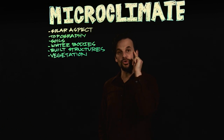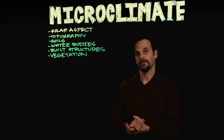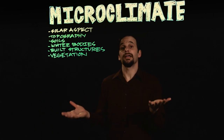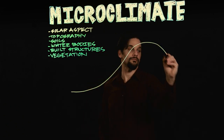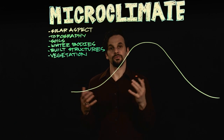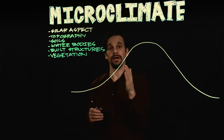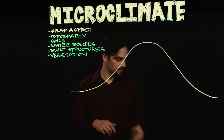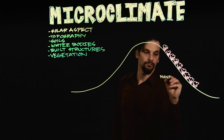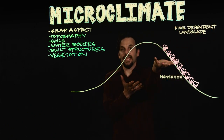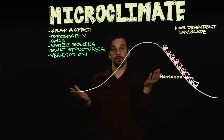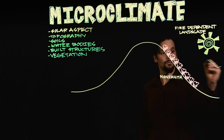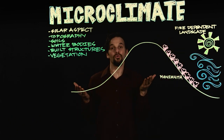Noticing microclimates is an observational tool that will make you a better designer. For instance, where I lived in the high desert of Arizona, there was a plant called Manzanita, or Arctostaphylus. That plant requires fire as part of its regeneration. So wherever you see that plant in abundance, it's what is called a fire-dependent landscape. So when you find a thick stand of Manzanita on a south- or sun-facing or west-facing slope, which is also the direction the prevailing summer winds come from, then you have a potent wildfire sector, and that would be a very risky place to locate a home.